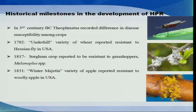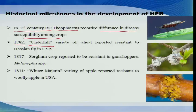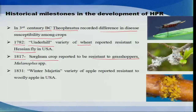Now let us look into the history of host plant resistance and some of the important milestones. In fact, humans have started observing this phenomenon quite a long time ago. In the third century BC, Theophrastus recorded variation in the susceptibility of crops against disease. Then in 1782, the wheat variety called Underhill was reported to be resistant to one of the major pests, the Hessian fly, in the USA. In 1817, some sorghum crop varieties were reported to be resistant to grasshoppers. Similarly, in 1831, a winter apple variety called 'Majetin' was reported to be resistant to woolly aphid in the USA.